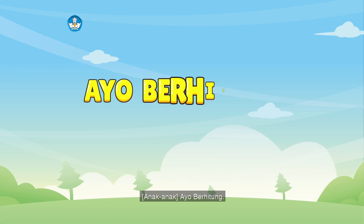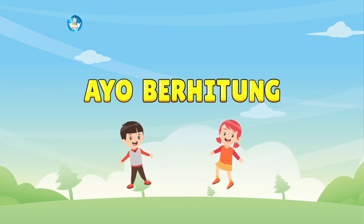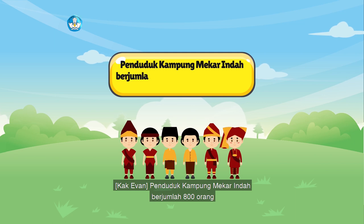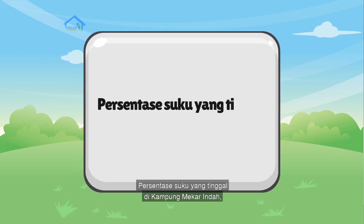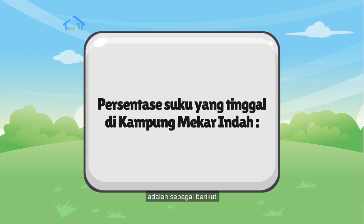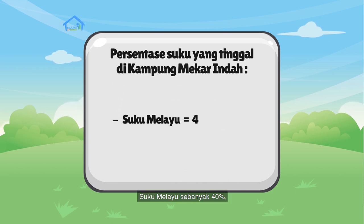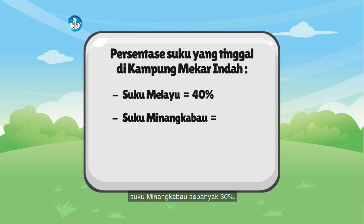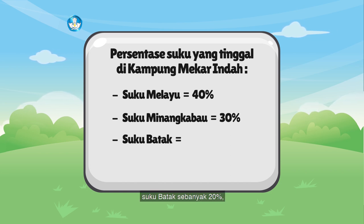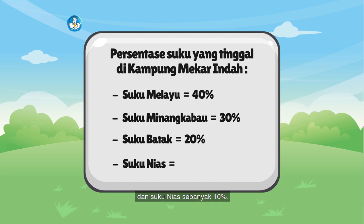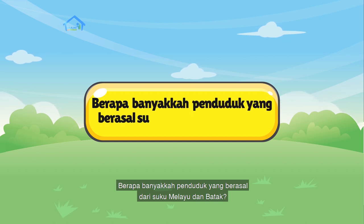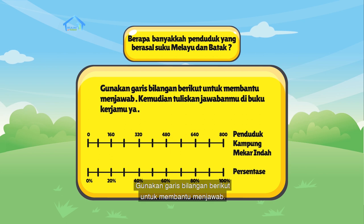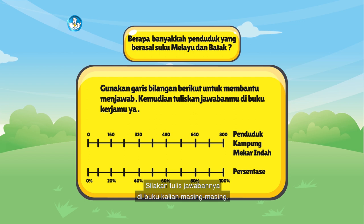Ayo berhitung! Penduduk kampung Mekar Indah berjumlah 800 orang dan terdiri dari berbagai suku. Persentase suku yang tinggal di kampung Mekar Indah adalah sebagai berikut. Berapa banyakkah penduduk yang berasal dari suku Melayu dan Batak? Gunakan garis bilangan berikut untuk membantu menjawab. Silakan tulis jawabannya di buku kalian masing-masing.